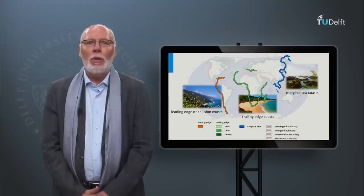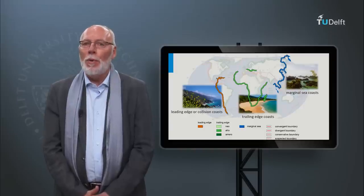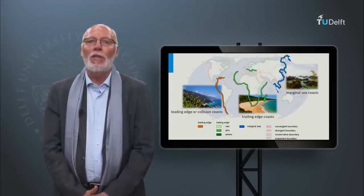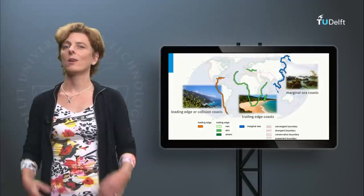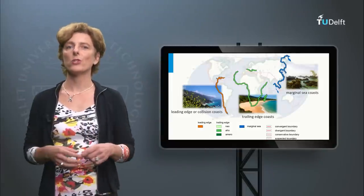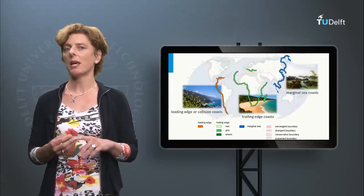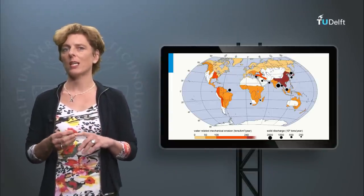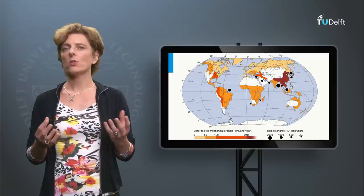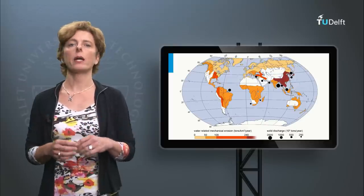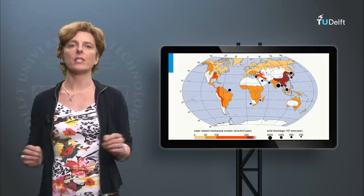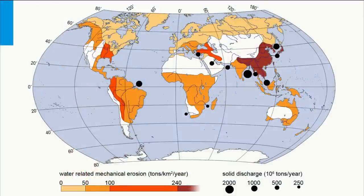Marginal seacoasts are tectonically stable coasts, protected from the open ocean by island arcs at converging plate boundaries. Most of the world's largest deltas are located on trailing edge and marginal seacoasts. These coasts combine ample sediment supply with wide and flat shelves, and this combination ensures a rapid building out of the coast.